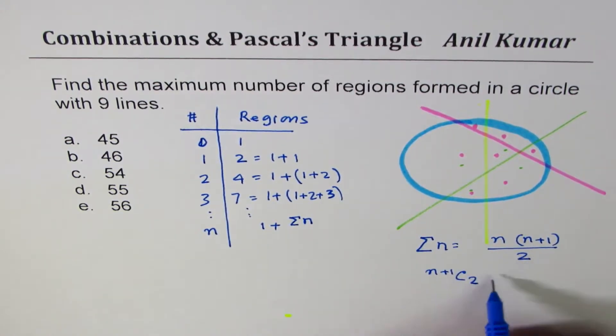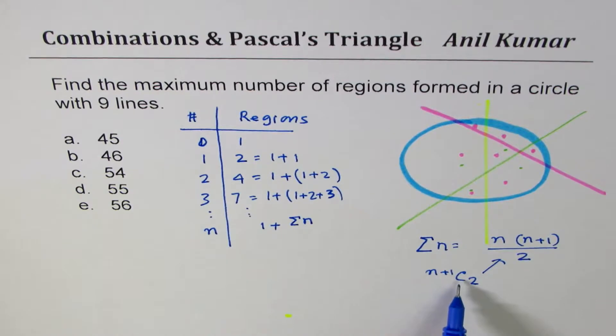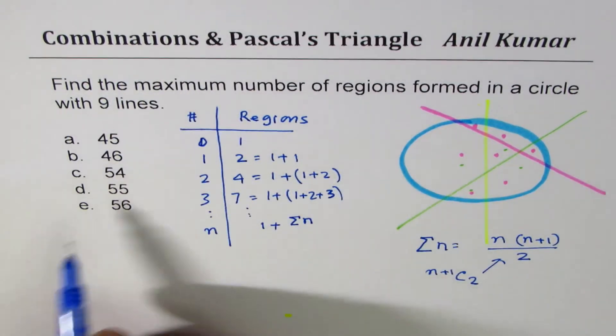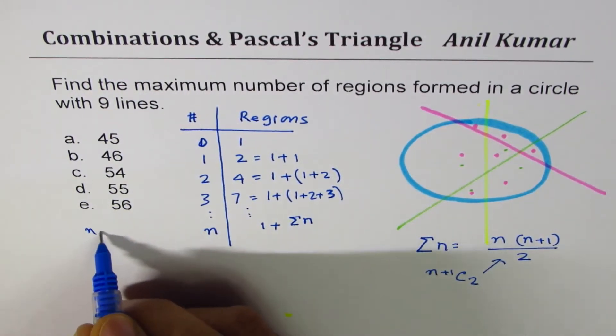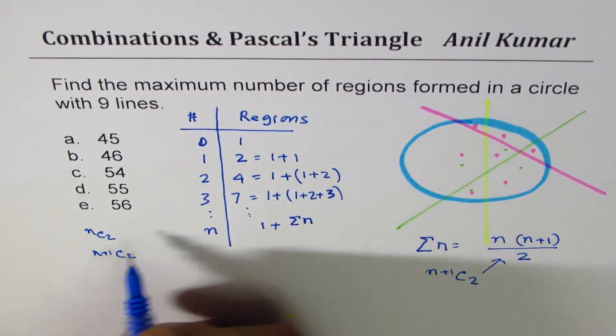That also gives you the same thing. The reason is sometimes I can give you choices in terms of combinations rather than numbers. So that is why I'm giving you this option under this topic. Under this topic my question could have had terms like nC2, n plus 1 C2, like this.